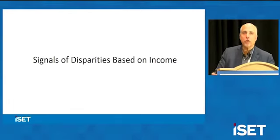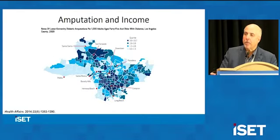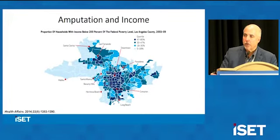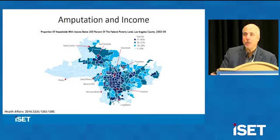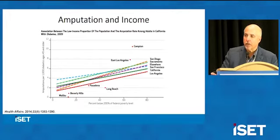One of the most sobering stories is that disparities exist based on income. This is actually a map of Los Angeles County showing that the poorer the population, the higher the risk of amputation in patients with diabetes — looking at income levels below 200% of the poverty level. Marked discrepancies exist in one county in one city in one state. Compare Malibu and Beverly Hills — not lower socioeconomic communities — whose amputation rates are way at the bottom compared to everywhere else in California. Really sobering.